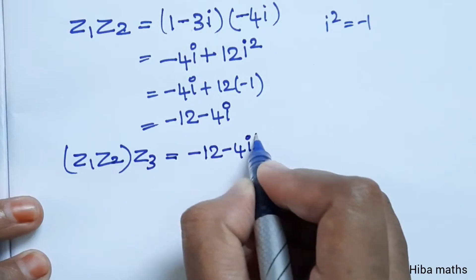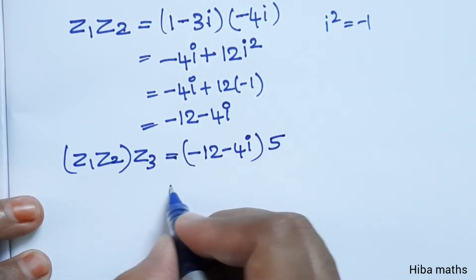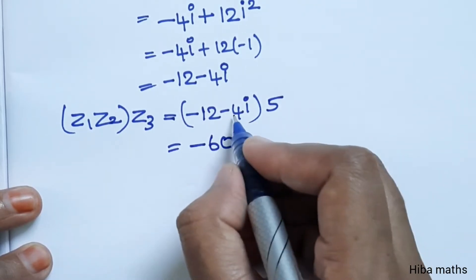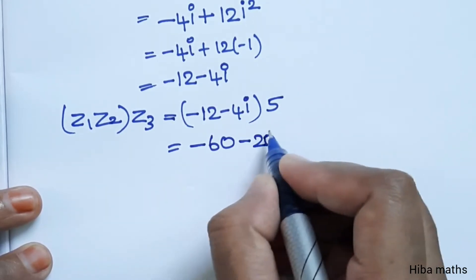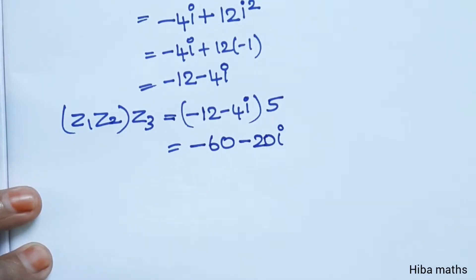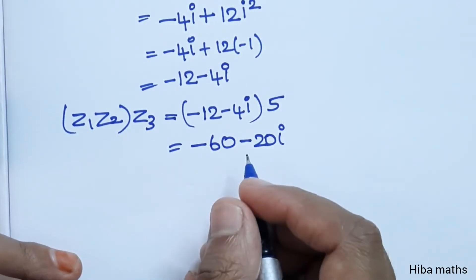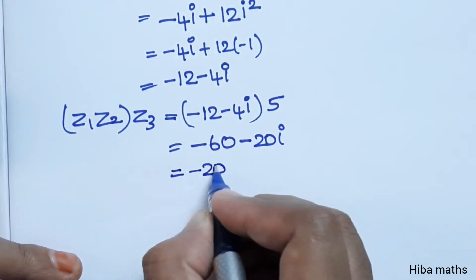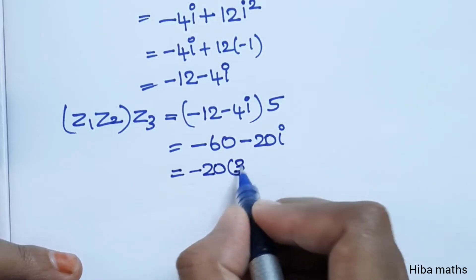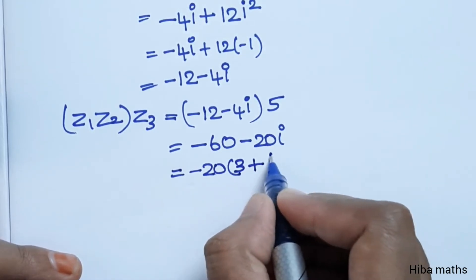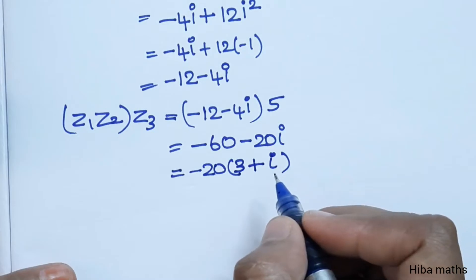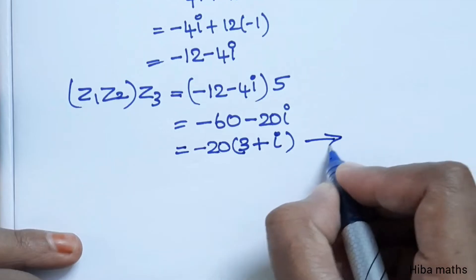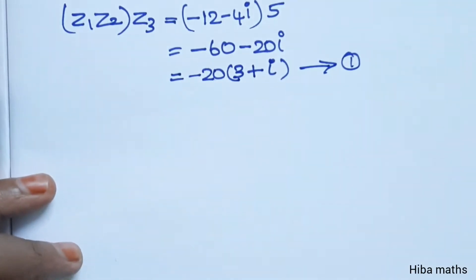So z1 into z2 equals minus 12 minus 4i. Now multiply by z3 value 5: minus 12 times 5 is minus 60, and minus 4i times 5 is minus 20i. Collecting terms: real part minus 60 plus 20 gives minus 40, so the answer is minus 40 minus 20i. This is the first equation.